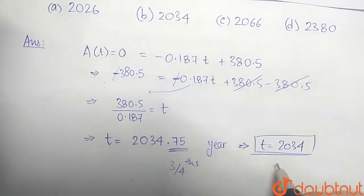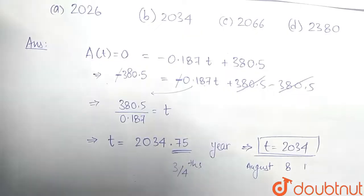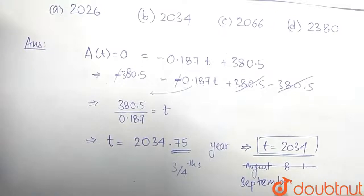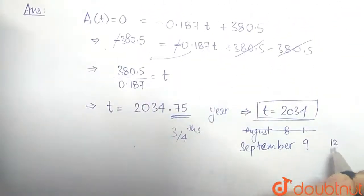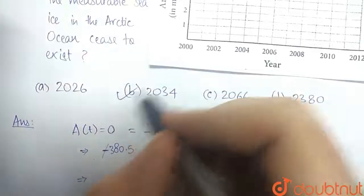Even if it happens in, suppose August... or no, it will be September. September is the 9th month out of a total of 12 months. So 9/12 will be 3/4, so it will occur in September of 2034, which is still the year 2034. Now comparing with the options, we see option B is correct.